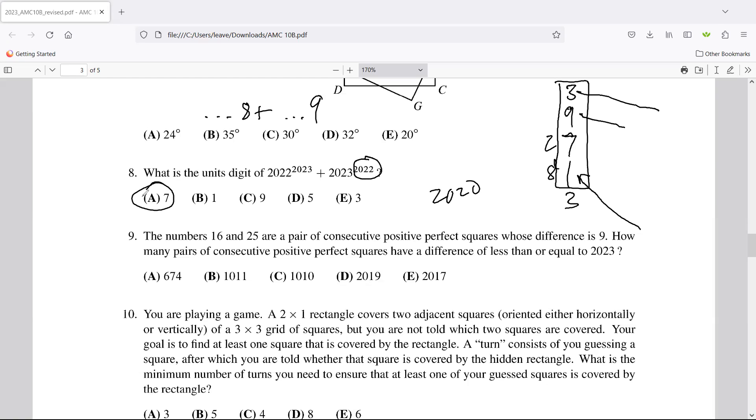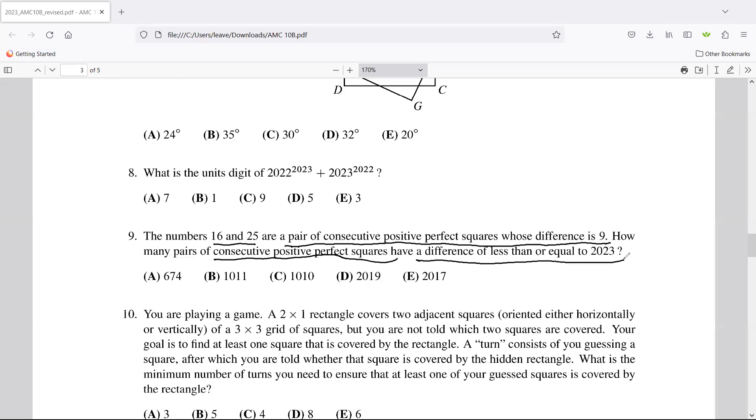Number nine. The numbers 16 and 25 are a pair of consecutive positive perfect squares whose difference is nine. How many pairs of consecutive positive perfect squares have a difference of less than or equal to 2023? This is textbook small notebook concept. I talk about it a lot in other videos.